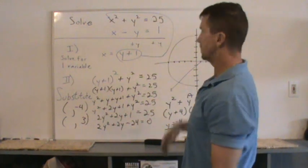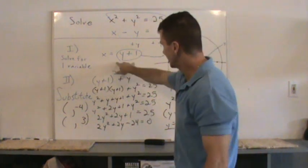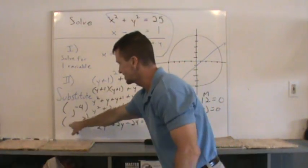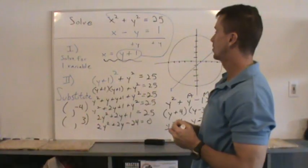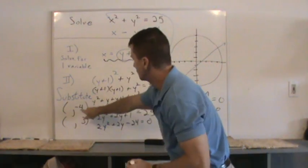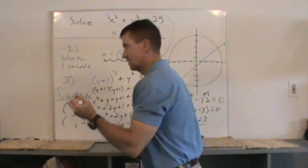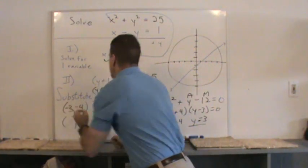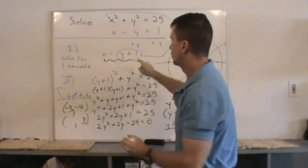Now, we need to find the corresponding x values. Where are we going to plug it back in? There's a big mess on the board. Pick the easiest equation you got. That one right there is pretty nice. X equal to y plus 1. So I'm just going to substitute negative 4 right there for y. Negative 4 plus 1, that's negative 3. And I'll substitute this 3 right here for y. 3 plus 1 is 4.